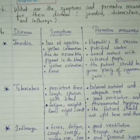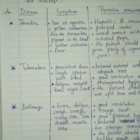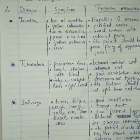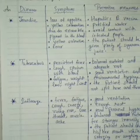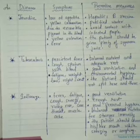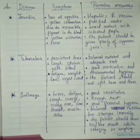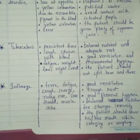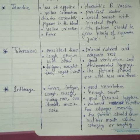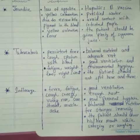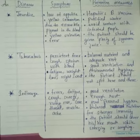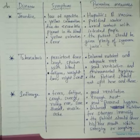What are the symptoms and preventive measures for jaundice, tuberculosis, and influenza? Symptoms of jaundice: loss of appetite, yellow colouration due to excess bile pigment in the blood, yellow urination, fever. Preventive measures: hepatitis B vaccination, purified water, avoid contact with infected people, and the patient should be given plenty of fluids including sugarcane juice.